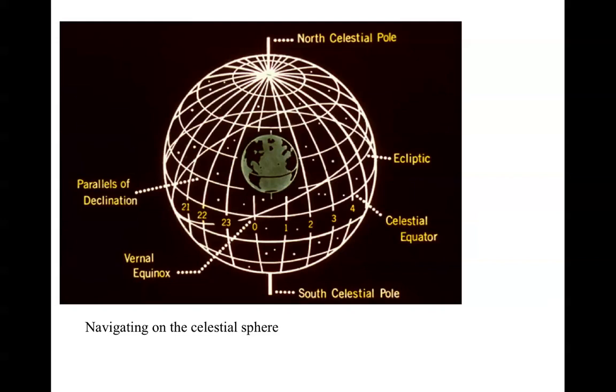This coordinate system, then, we give in terms of declination, which is completely analogous to latitude. That is, it starts at zero at the celestial equator and goes to plus 90 at the North Pole and minus 90 at the South Pole.